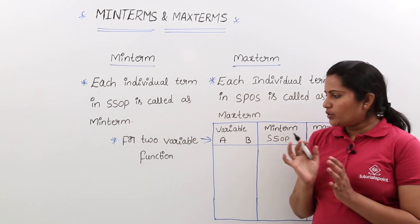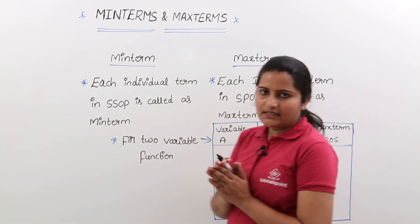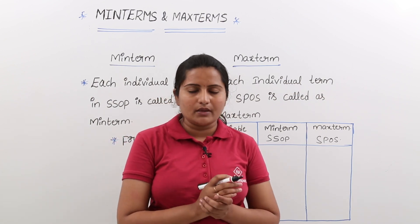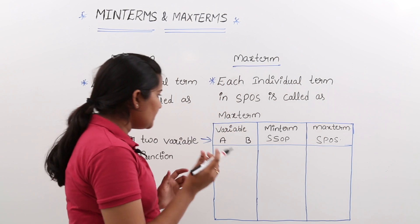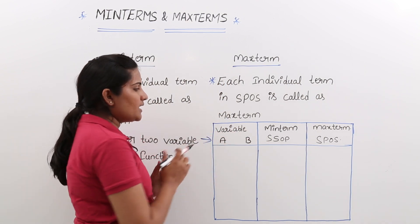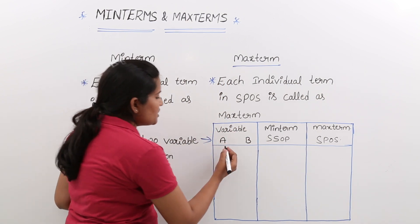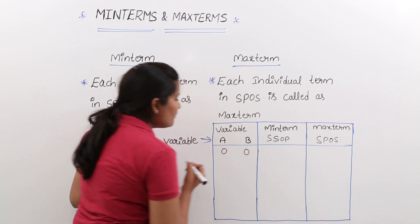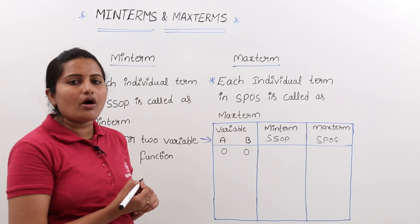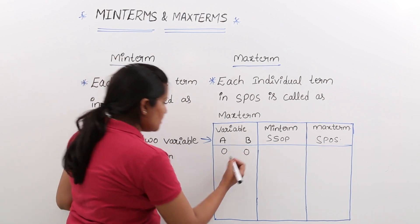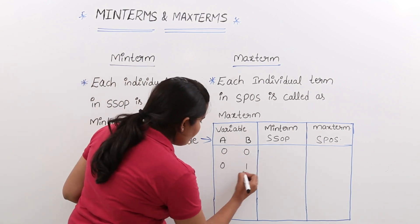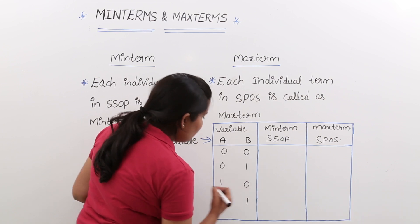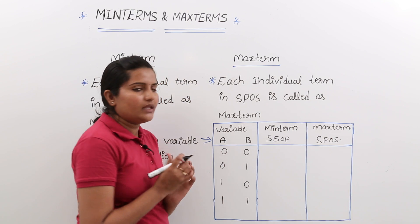For a two-variable function, for example f(a, b), the combinations are: 0,0 — 0,1 — 1,0 — and 1,1. These are the possible four combinations for a two-variable function.